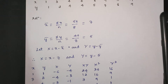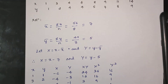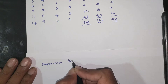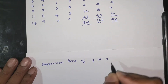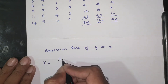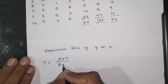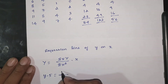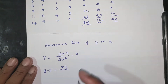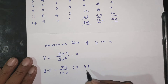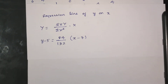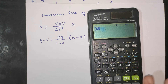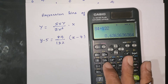Now we write the regression line of y on x. The formula is: capital Y = (ΣXY / ΣX²) × capital X, where ȳ = 5, ΣXY = 84, and ΣX² = 132. So the regression coefficient b = 84 divided by 132 = 0.636.